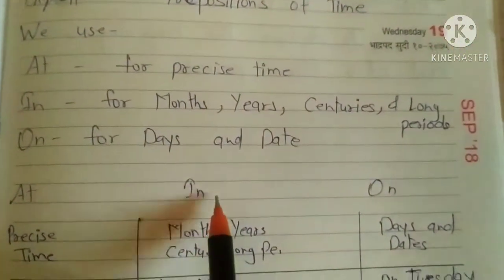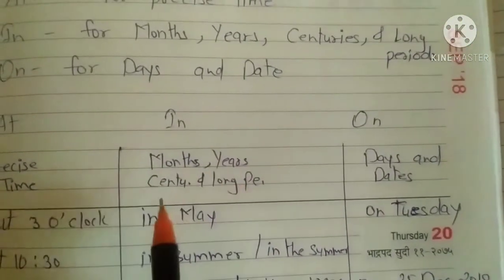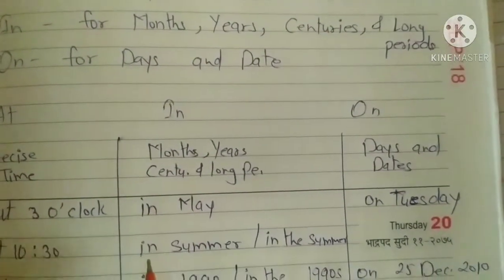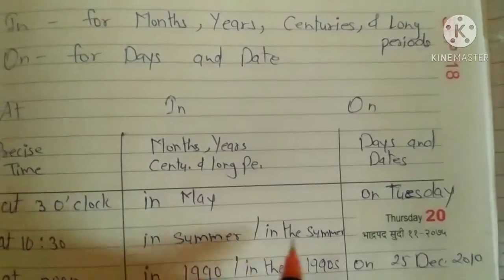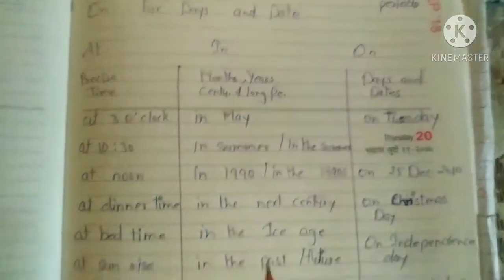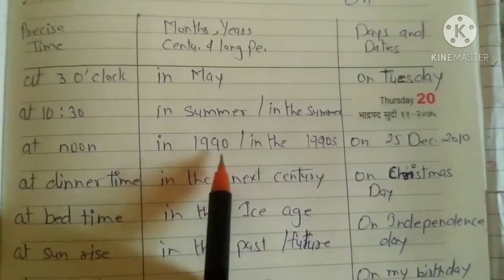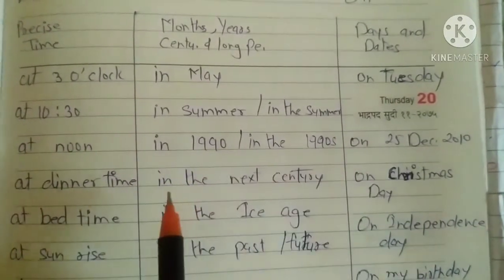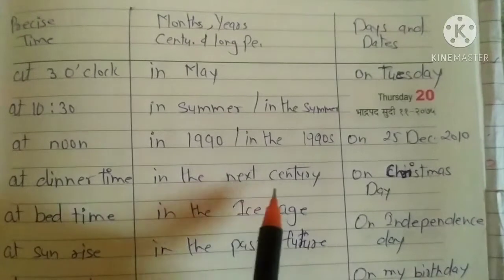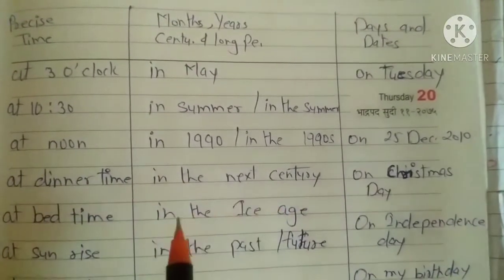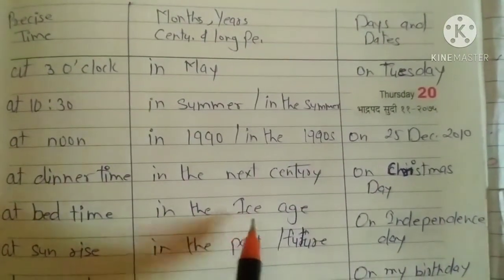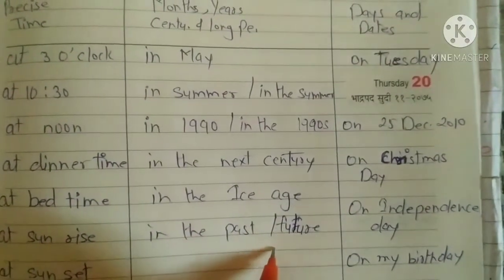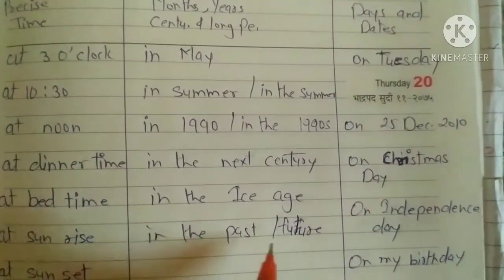We use 'in' for months, years, centuries, and long periods. For example: in May, in summer, in the summers, in 1990, in the 1990s, in the next century, in the ice age, in the past, in the future.